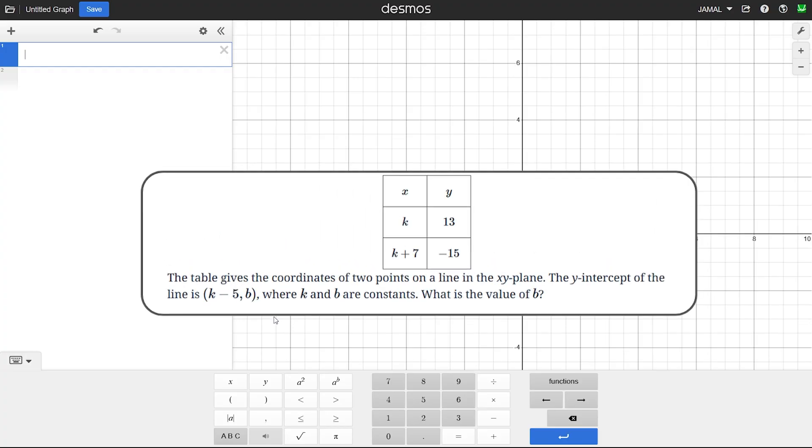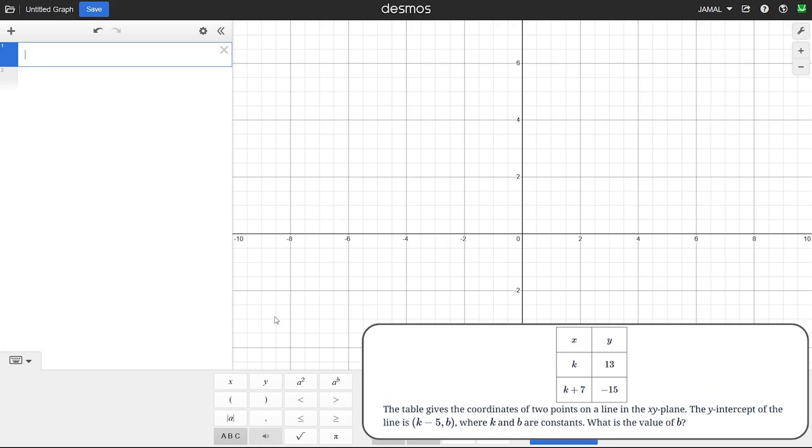Here we're given a problem with a table, so we can assume we'll have to use a table regression. The table gives the coordinates of two points on a line in the xy-plane. The y-intercept of the line is (k-5, b) where k and b are constants. What is the value of b? Let's focus on the y-intercept. We know that for a linear equation, our y-intercept will have the x value of zero. So k-5 is zero, meaning k is gonna be five.